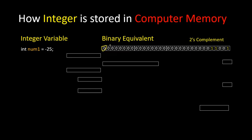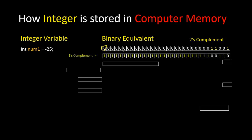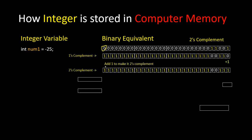Instead of storing the direct binary equivalent, the computer stores the two's complement of this binary. To calculate two's complement, first we need to calculate the one's complement. The one's complement of this binary equivalent is obtained by flipping all bits — if we have a 1 we write 0, and if we have a 0 we write 1. Then, to get the two's complement, we add 1 to the one's complement.